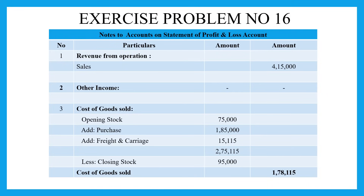The second step is the debit side — all direct and indirect expenses. The first category is cost of goods sold. Opening stock is 75,000 rupees. Purchases total 1,85,000 rupees, so opening stock plus purchases gives 2,60,000. Adding carriage charges of 15,115, the total comes to 2,75,115 rupees. Less closing stock of 95,000 rupees gives us cost of goods sold of 1,78,115 rupees.